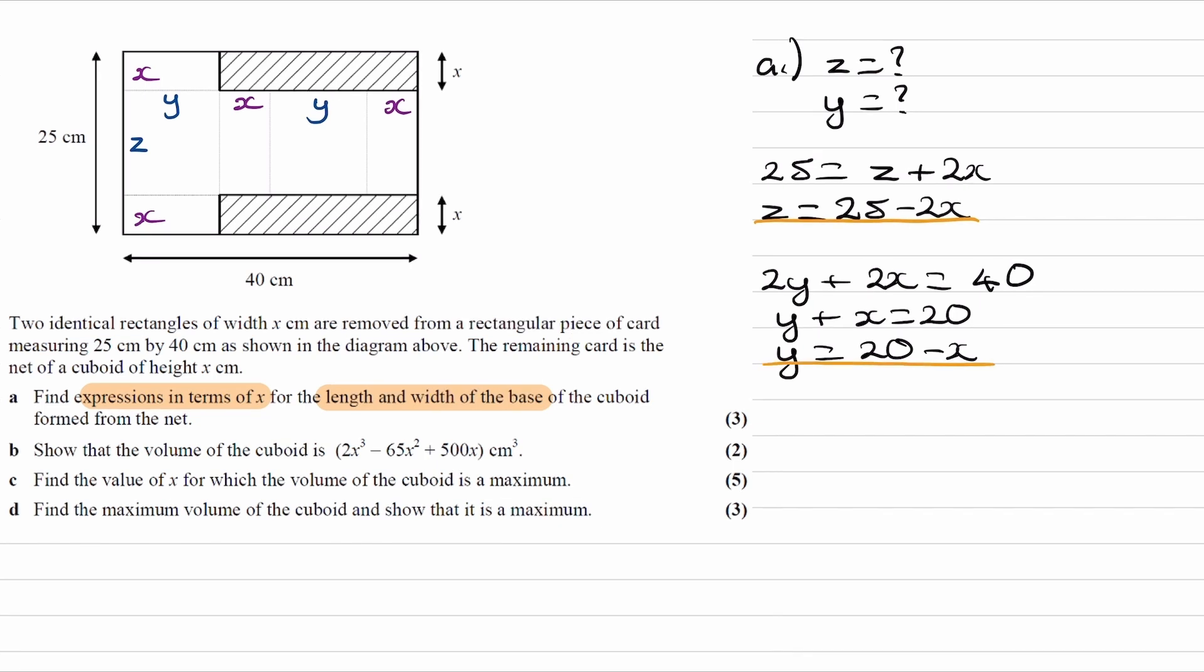And now for part B, we want to show that the volume of the cube is equal to this. So we have the two dimensions of our base. We know what z is, we know what y is, and we know what the height of our shape is as well, x. So our volume would then equal z times y times x, which would be, so z is 25 minus 2x, y was 20 minus x, and then we have the x at the end.